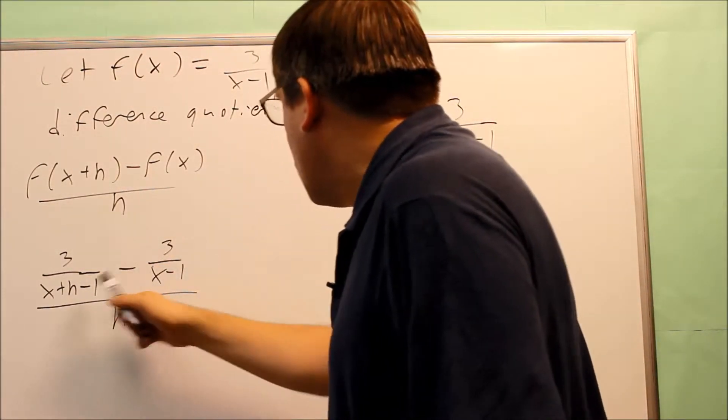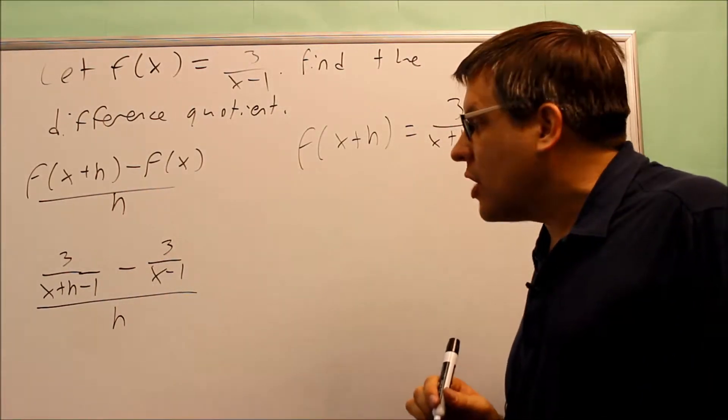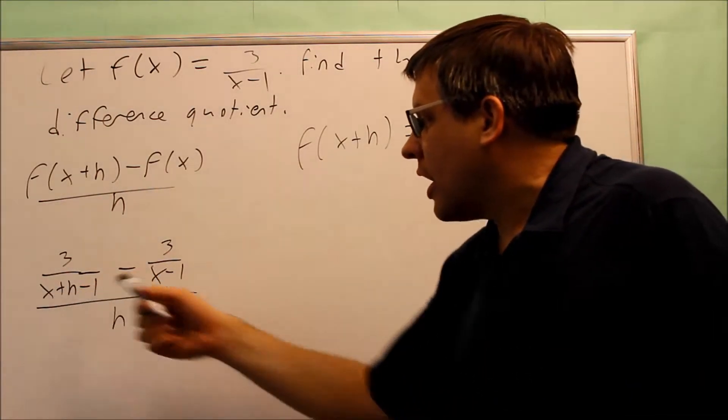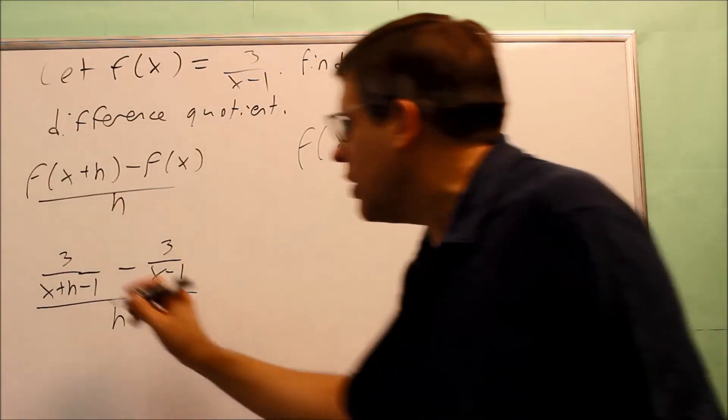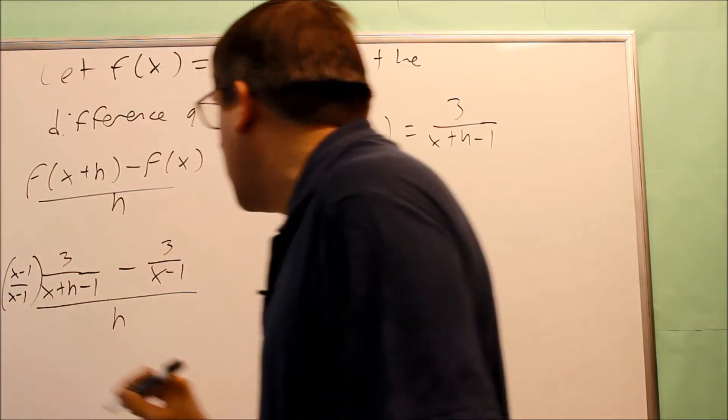I'm going to multiply this one by where it's missing. The common denominator is going to be x minus 1 times x plus h minus 1. This one already has the x plus h minus 1, but I need to multiply this one by x minus 1 over x minus 1.